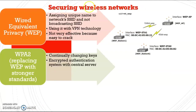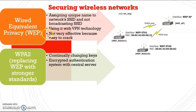How do you secure a wireless network? We have two types. The first is WEP — Wired Equivalent Privacy. With WEP, you assign a unique name to your SSID and do not broadcast the SSID.